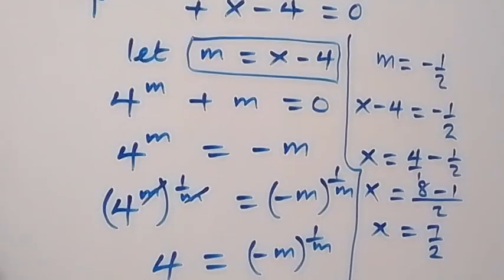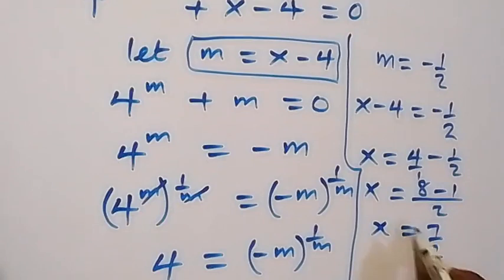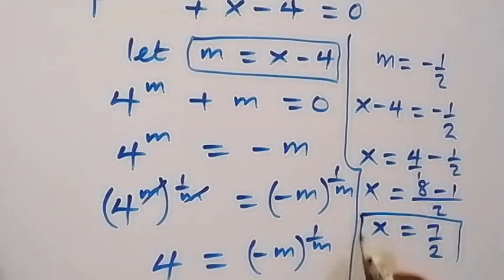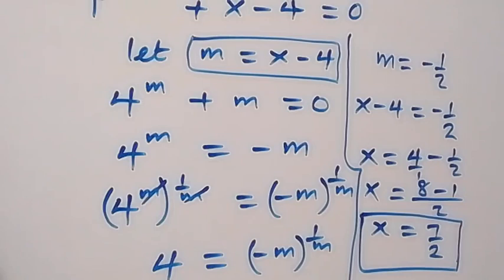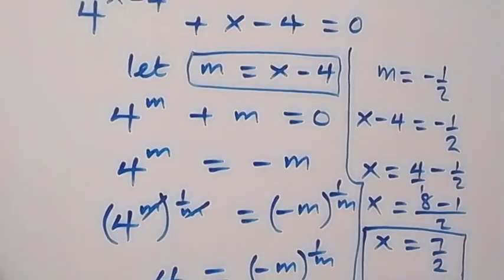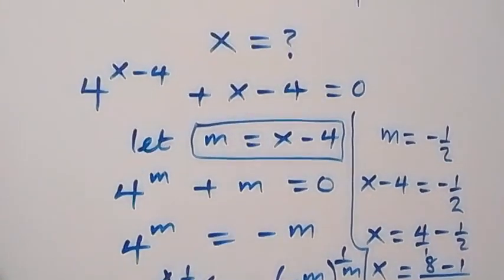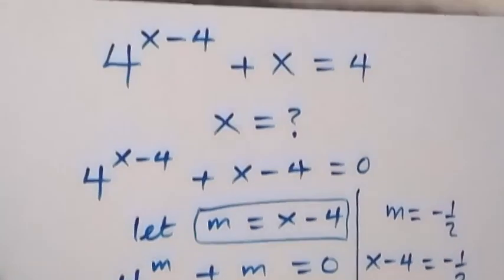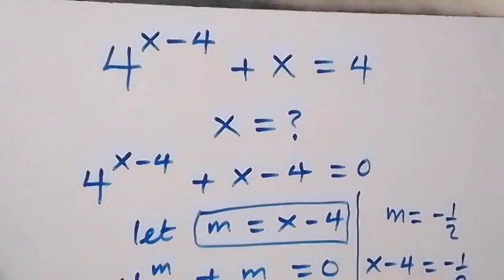This becomes 8 over 2 minus 1 over 2, so x now equals to 7 over 2, which we can also write as 3 and 1 over 2. So here we have the solution to the problem, which is x equals to 7 over 2.